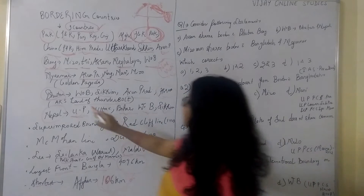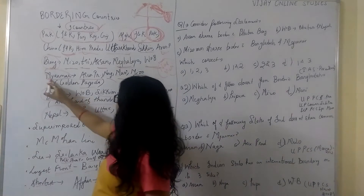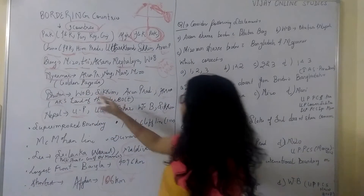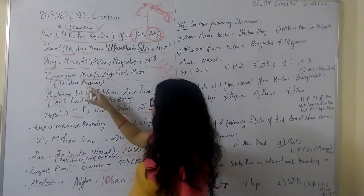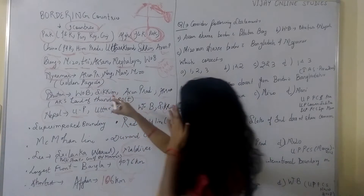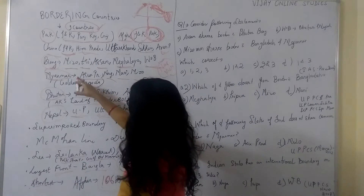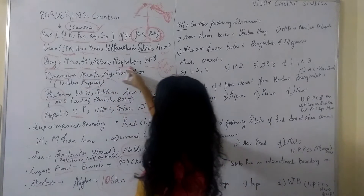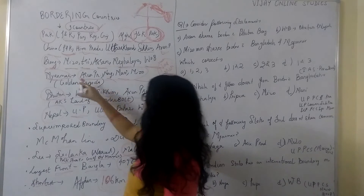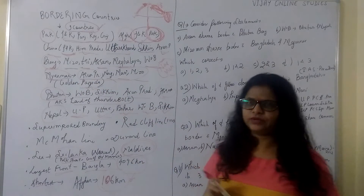Then Myanmar, which is also known as the Land of Golden Pagoda. It is bordered with Arunachal Pradesh, Nagaland, Manipur and Mizoram.